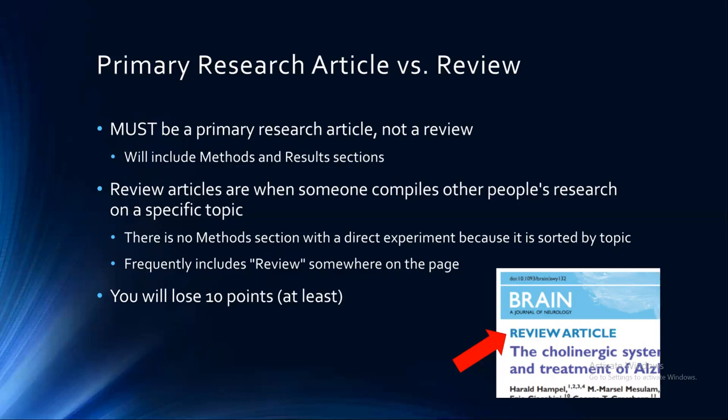If I'm reading the grading rubric and you don't have materials and methods or results, you're going to lose even more points. Review articles usually say 'review' somewhere on the paper. The easiest way to tell is if you see abstract and introduction, and then instead of jumping into results or materials and methods, it gives you topics — kind of like the way a book is broken apart into chapters with different section headings. That means it's going to be a review paper and not a primary research article.